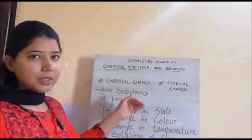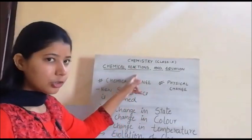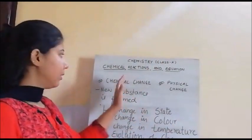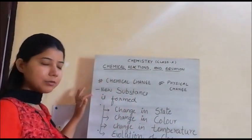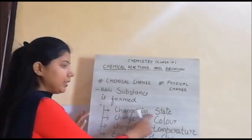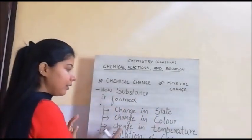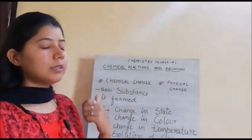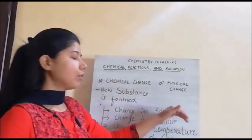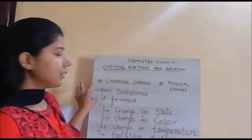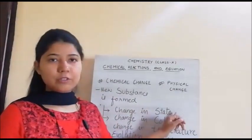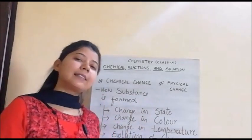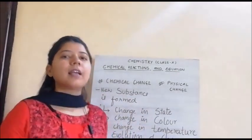In the next class, we will jump to writing chemical reactions, then expressing them in the form of equations, and so on. Till then, your task is to write at least 3 to 4 examples of chemical change. We will discuss further things in the next class. Stay safe and healthy. Bye.